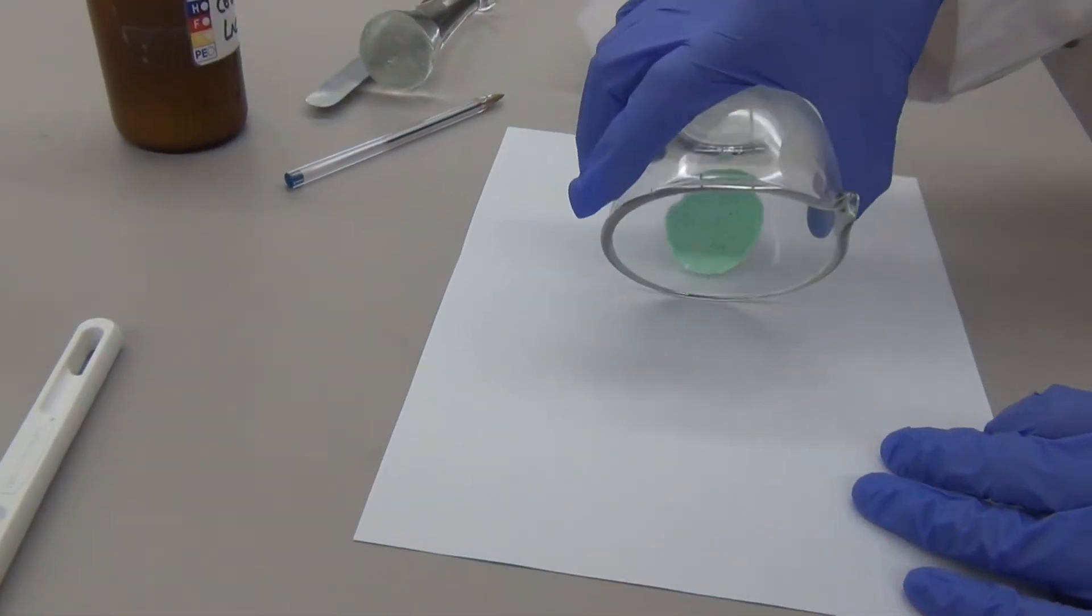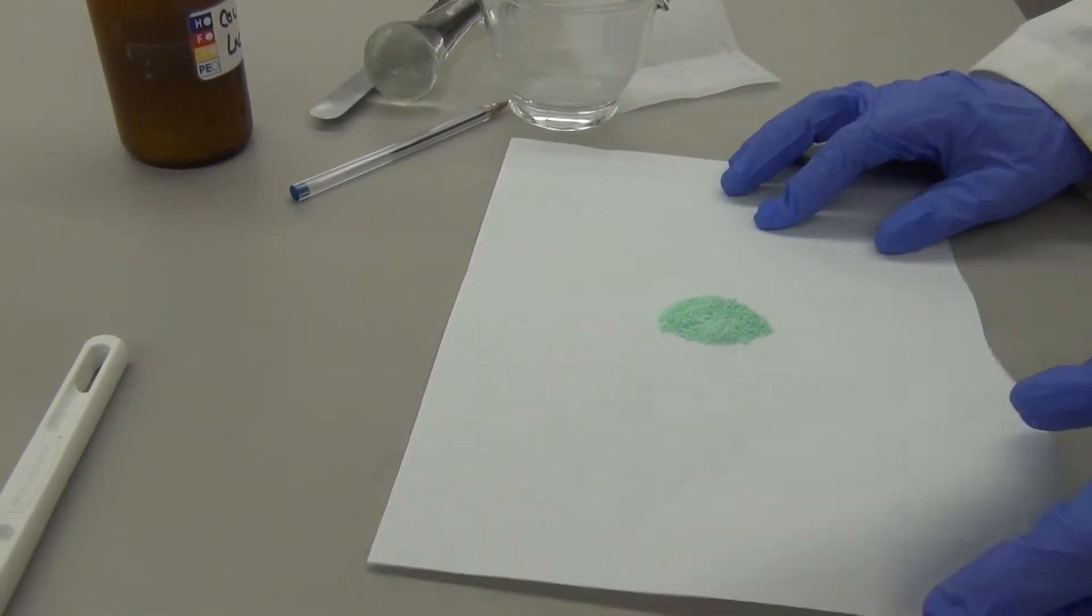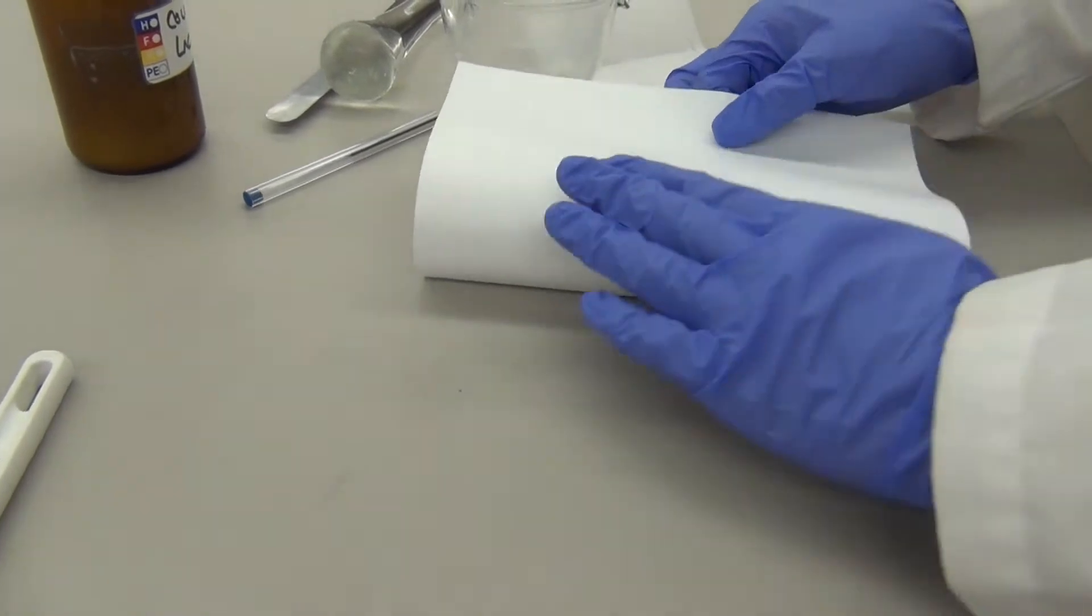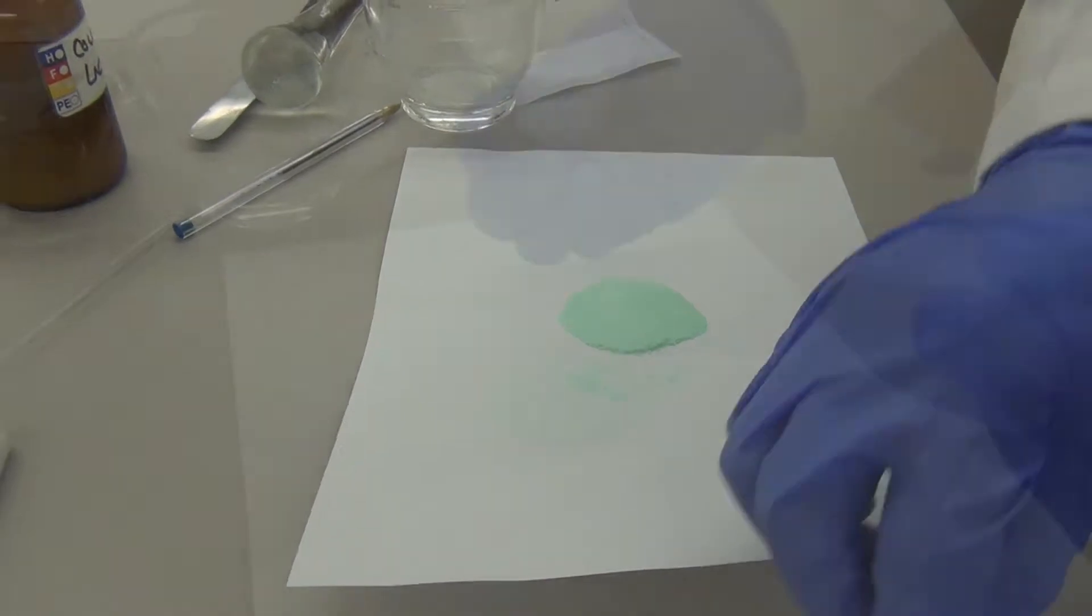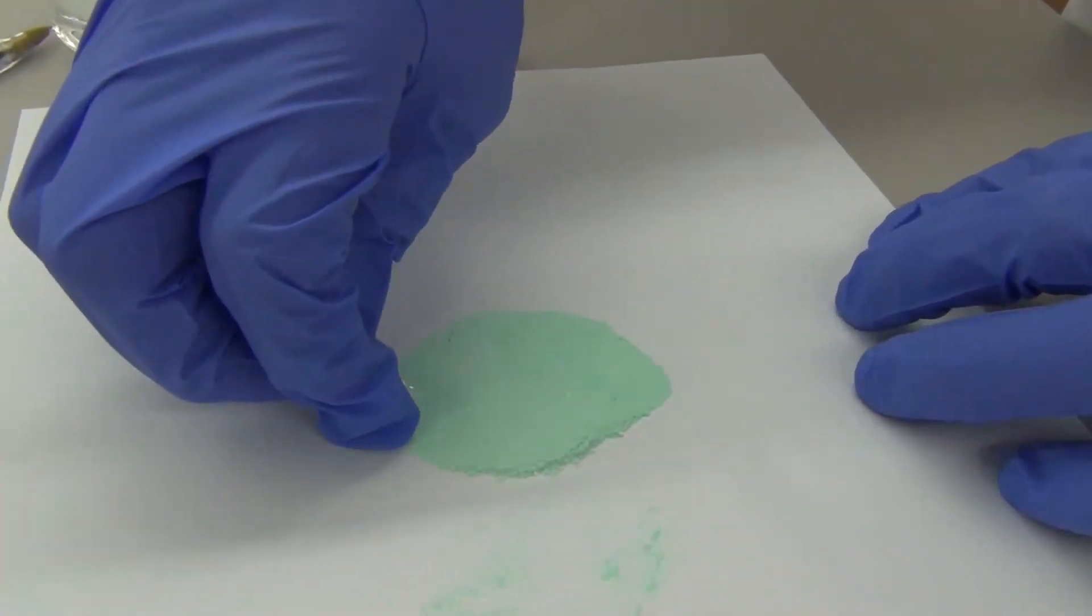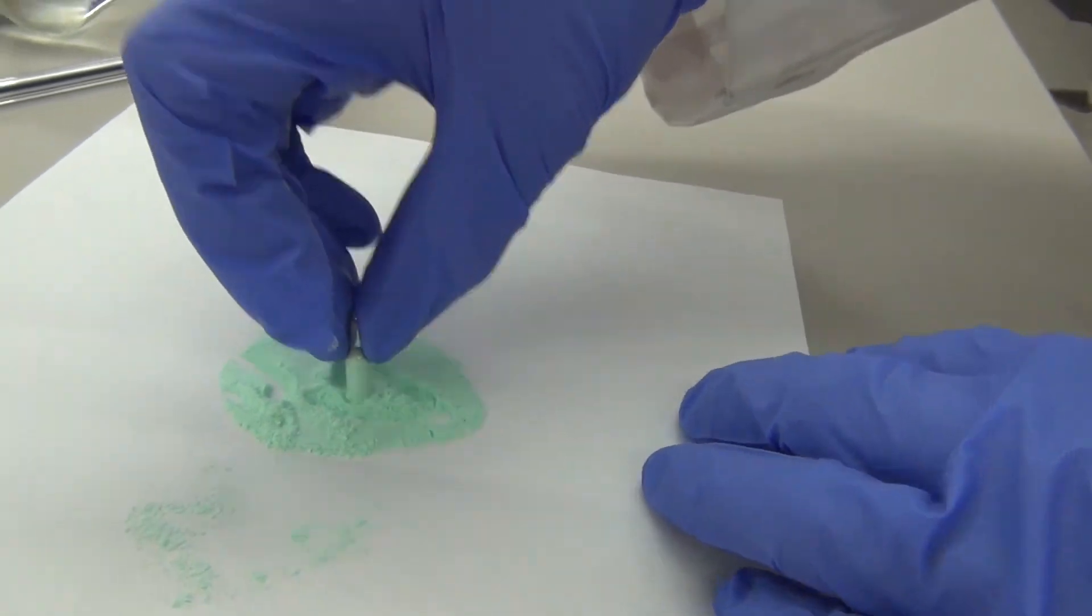Pour the drug colored lactose mixture onto the blank sheet of paper. Fold the paper to flatten out the mixture. Now you can go ahead and start filling your capsules. Scoop up the powder into the empty capsule and then pat the capsule down into the powder to try and pack it tightly.